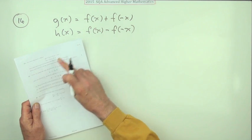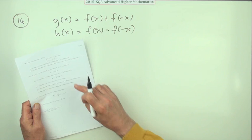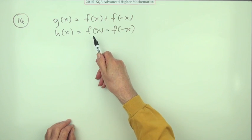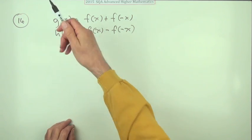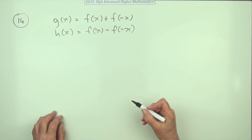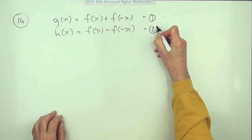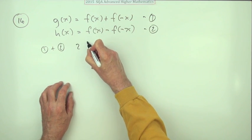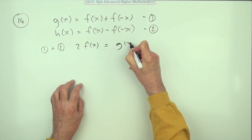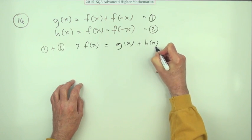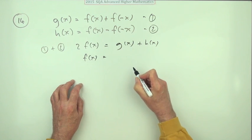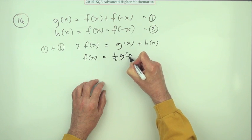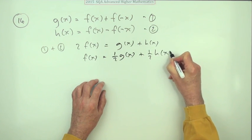And again, the last part said hence show that f of x can be expressed as the sum of an even and an odd function. Well, of course, if g can be expressed in terms of f and h can be expressed in terms of f, then f can be expressed in terms of both of them, and you simply add them together to do that. If I call that one and I call that two, and I add them together, one plus two would give me two lots of f of x equals g of x plus h of x, which means that f of x would be a half of that, or since it said the sum, I'll put down two separate terms: a half of g of x plus a half of h of x.